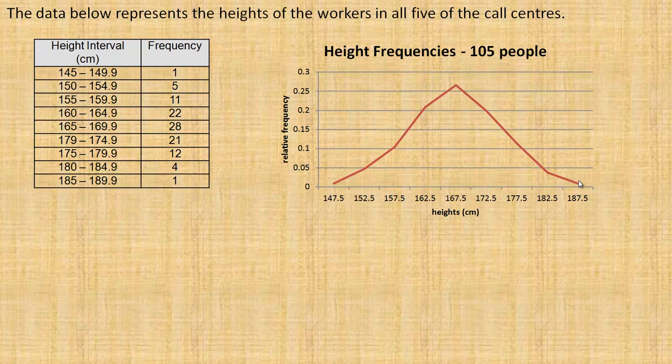A normal curve has the highest probabilities or frequencies in the middle, and it tails out towards either end symmetrically. This is fairly symmetrical.